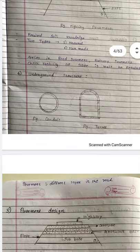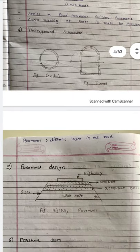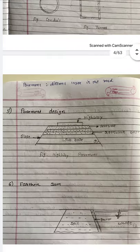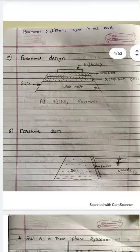Underground structures — conduits and tunnels — may be made through mountains or rock. You need knowledge of the soil and rock properties before constructing this kind of structure. So underground structures are also within the scope of soil engineering. Next there is pavement design.